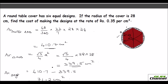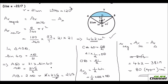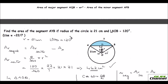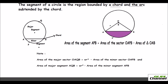To find the area of a segment, find the area of the corresponding sector minus the area of the triangle — that gives the area of the segment. Thank you, see you in the next class. Bye.